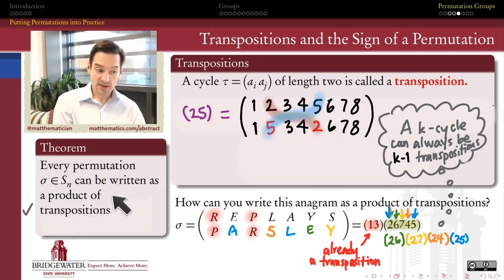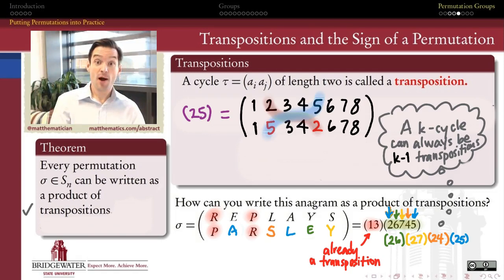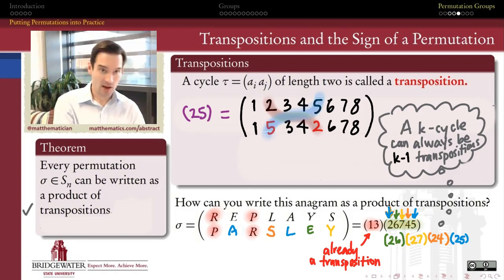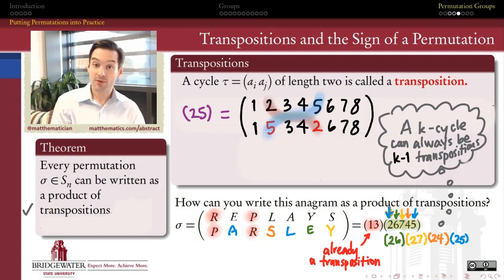This suggests a proof of the theorem that every permutation can be written as a product of transpositions. Why? Because it can first be written as a product of disjoint cycles, as we saw a couple of videos ago. Then I can use this process to express each one of those cycles — each k-cycle — as a product of k minus one transpositions.